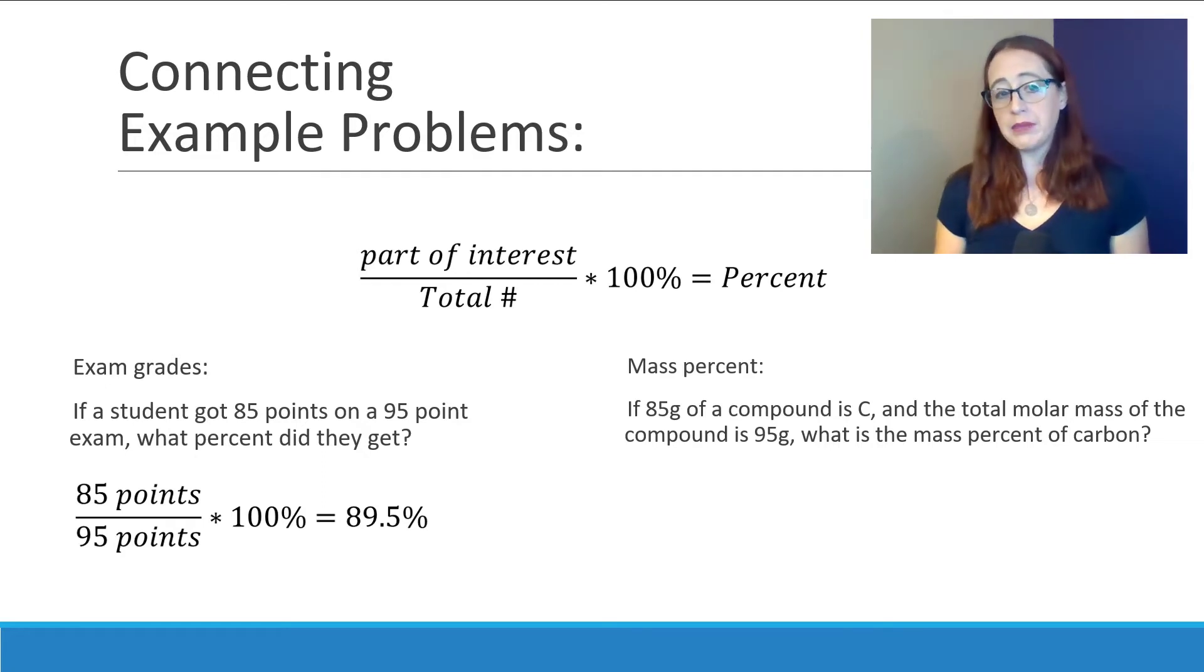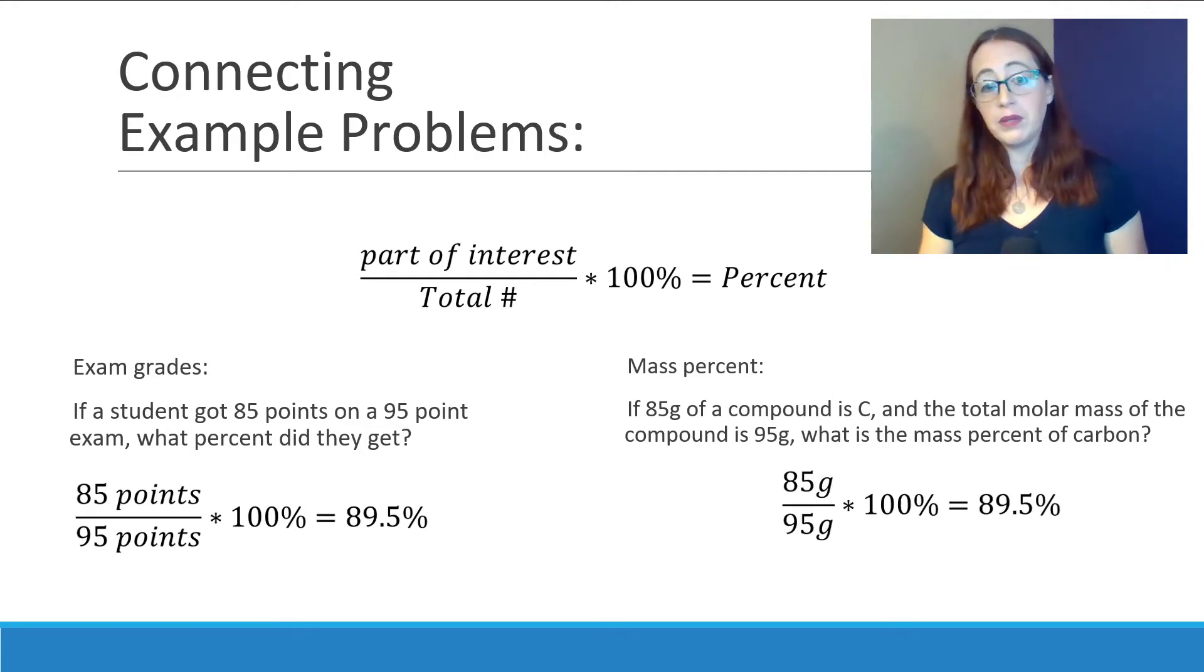In the mass percent question, I'm going to ask, if 85 grams of a compound is carbon, and the total molar mass of the compound is 95 grams, what is the mass percent of carbon? And you will do this in an identical way. You will take 85 divided by 95 times by 100%, and we get that same 89.5%. So, we took the mass of interest over the total mass times 100% to get our percent of carbon, just like we did with our exam grades.